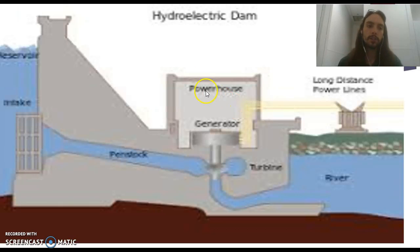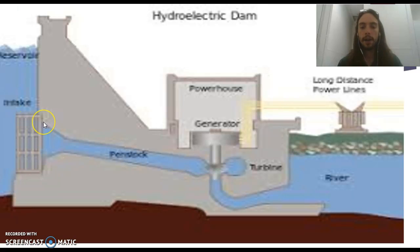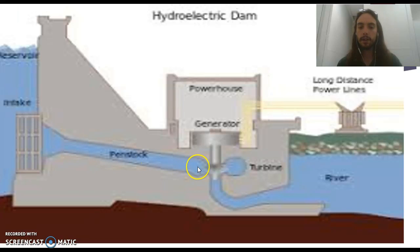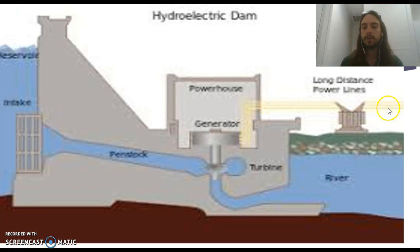Here's a hydroelectric dam. There's a reservoir buildup behind the dam with an intake sieve. Sluice gates are opened or closed depending on energy need or water flow. Gravity pulls water down through the path of least resistance, turning a turbine, which turns a generator in the powerhouse, creating electricity that goes to long-distance power lines, then flows out through the river.